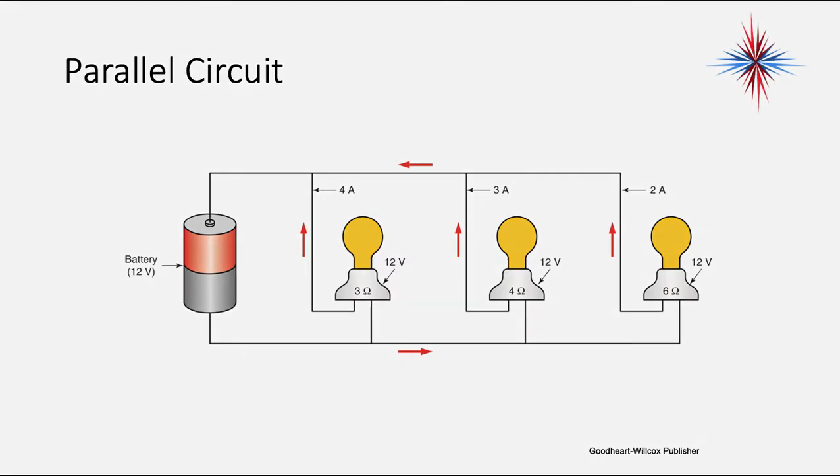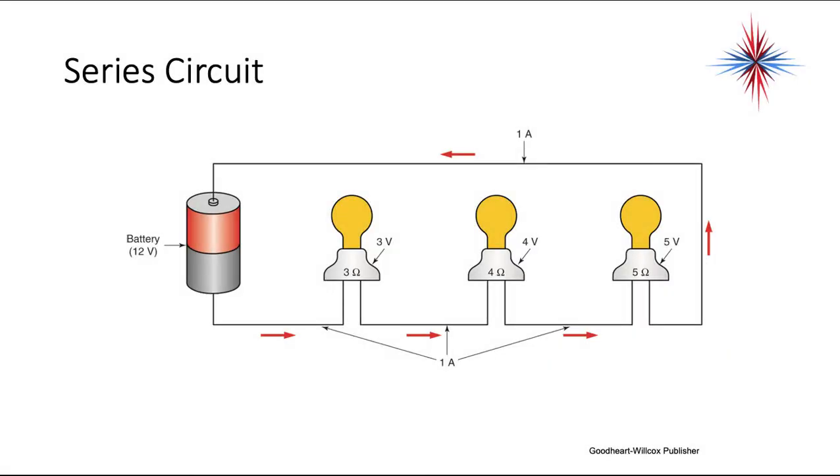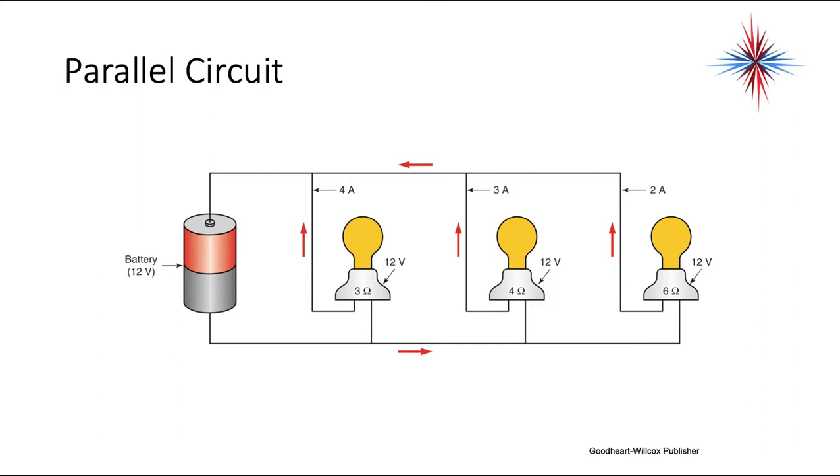In the HVAC industry, series circuits are used for safeties for the most part. Safety controls are all wired in series. If any safety control opens, we want the circuit to cease to operate. Parallel circuits are most often used for the load side of the system, the part that does the work, because we want every load, which would be motor, heater, everything else, to get full source voltage.